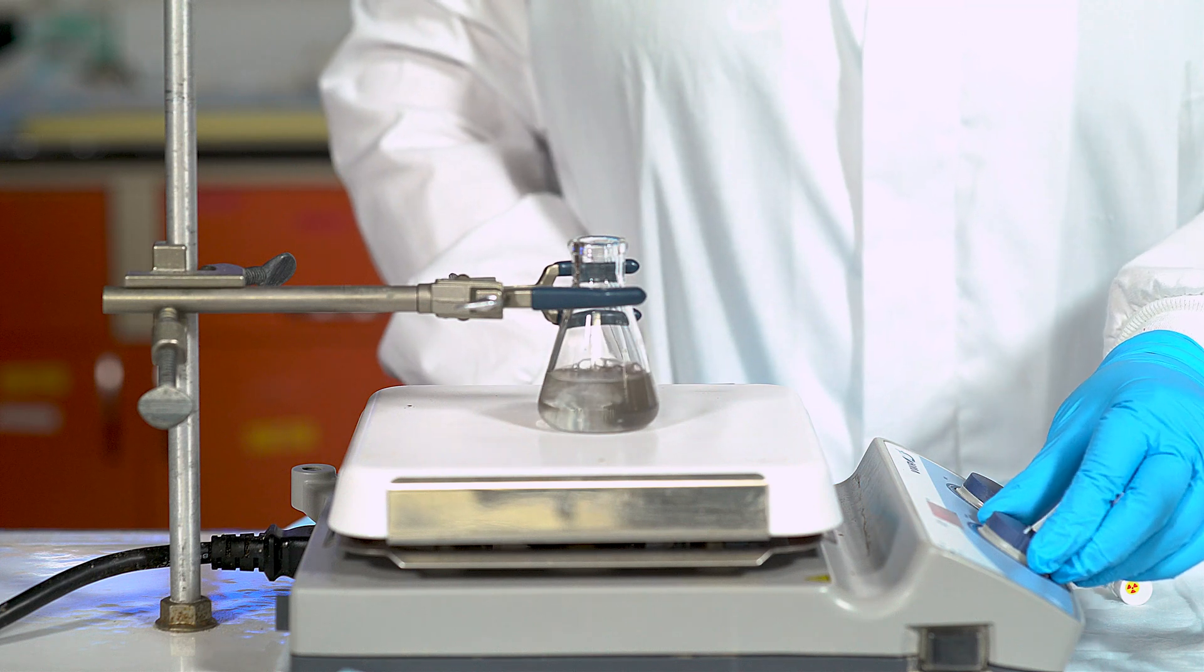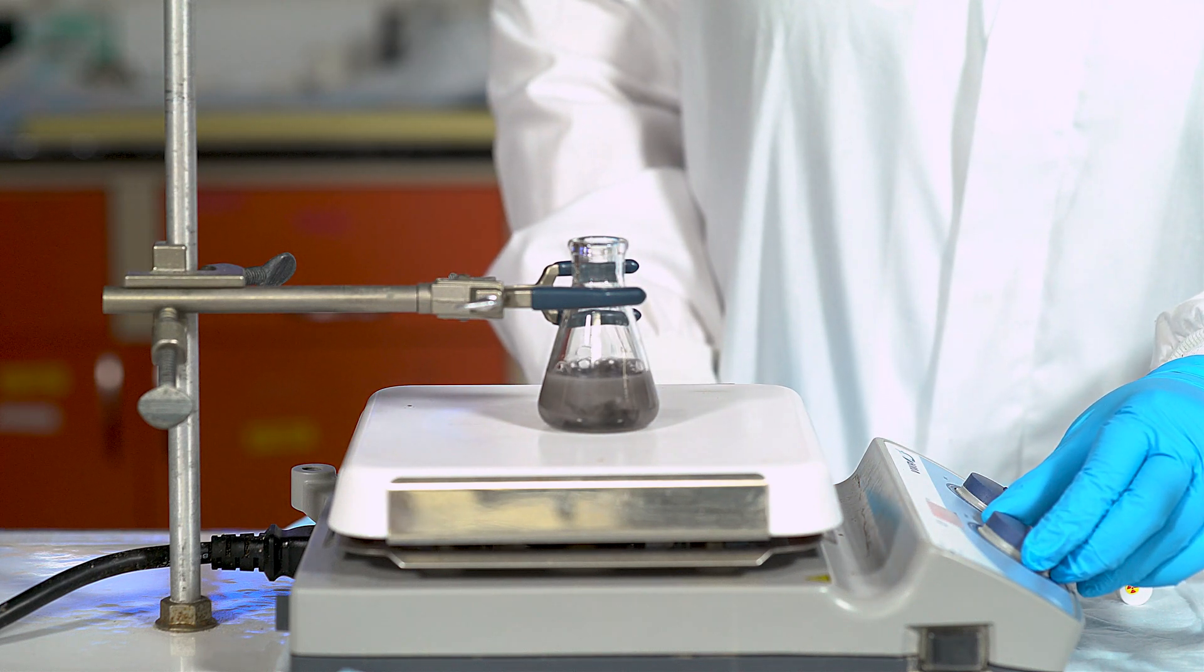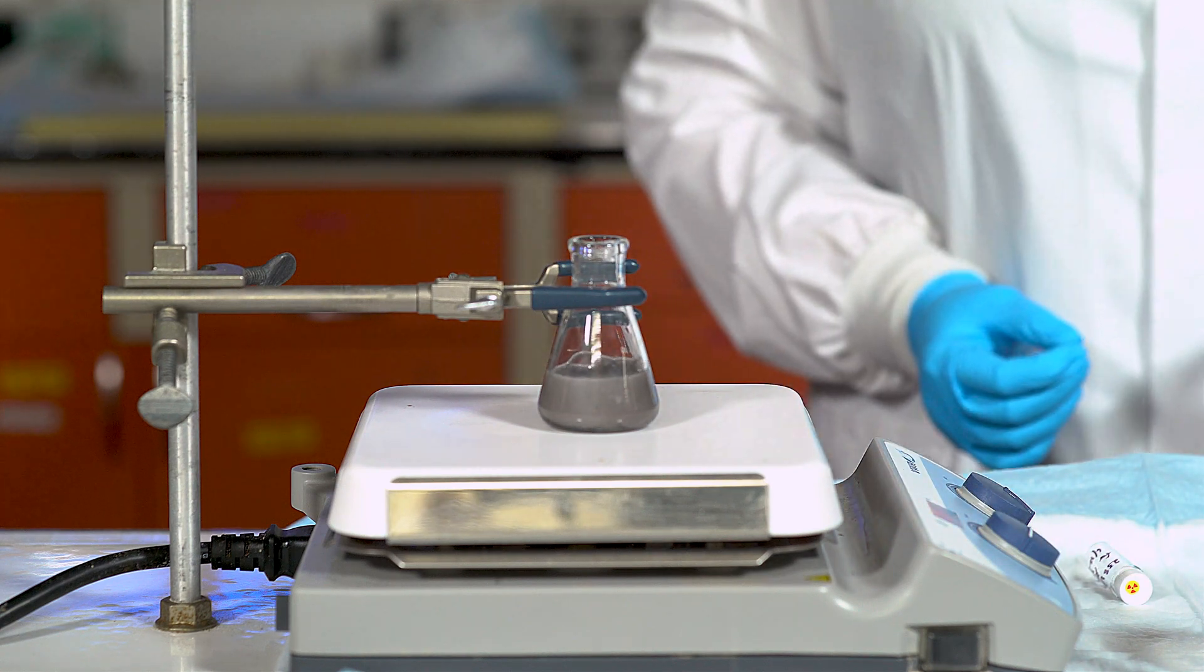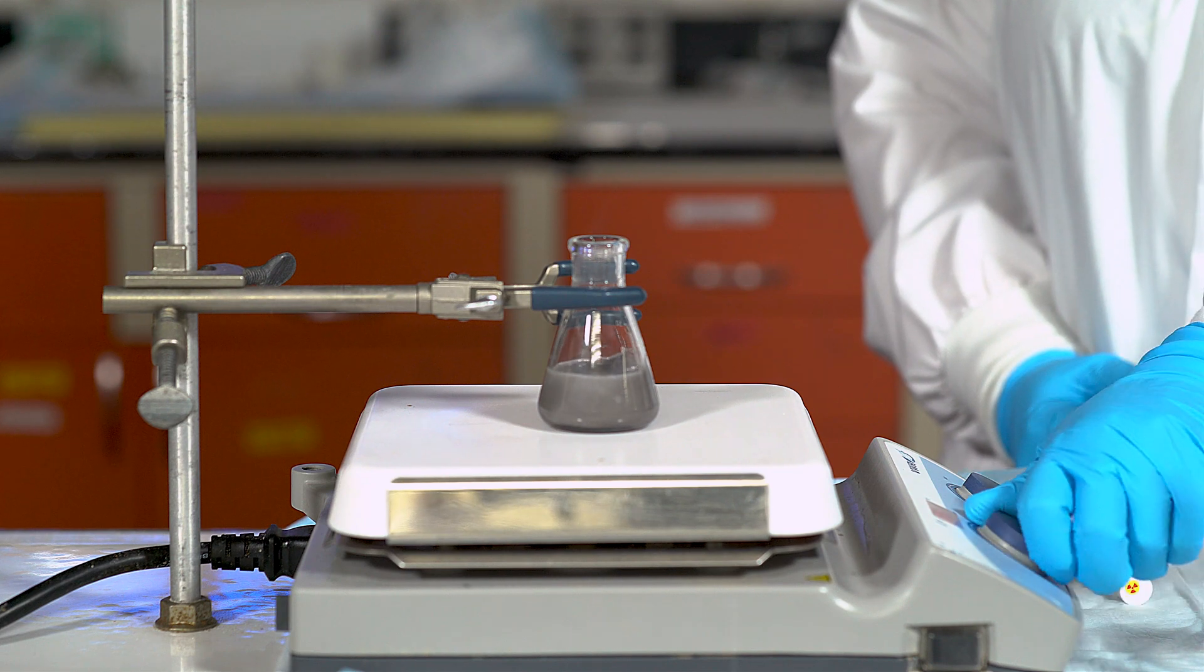Here we can see that the solution turns a dark gray-green color. However, the dissolution was incomplete. This is evidence that the sample contains uranium dioxide, as it dissolves less readily than pure uranium metal in hydrochloric acid.